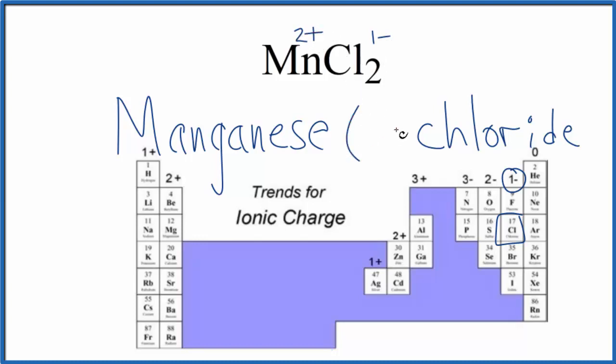Because of that, we're going to put in parentheses Roman numeral II to show that the manganese ion here will have a 2+ ionic charge. So this is the name for MnCl2, manganese(II) chloride.